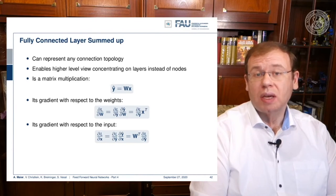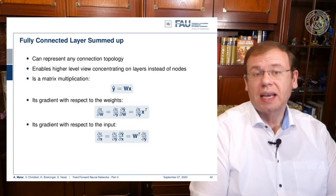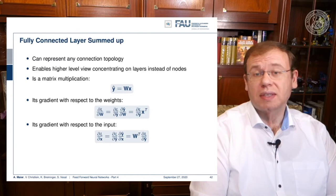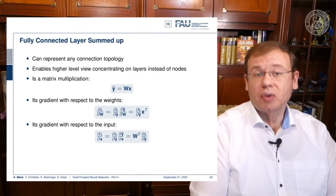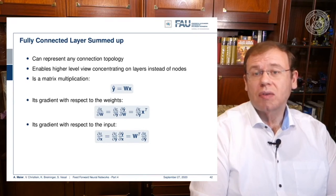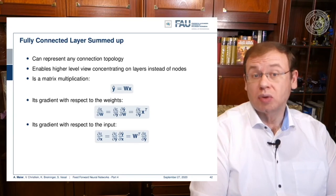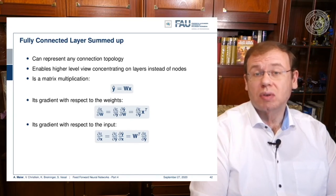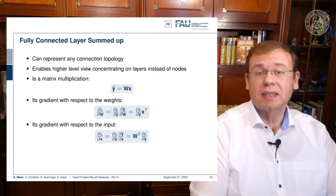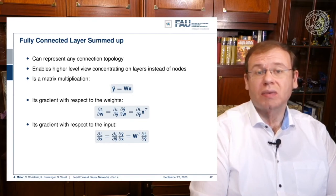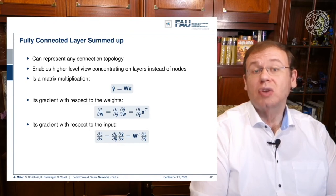For the partial derivative of y-hat with respect to x — also something you can find in the Matrix Cookbook, a very useful reference I'll provide in the description — we get W-transpose. So W-transpose multiplied with the loss vector gives a vector again. This is the vector you will need to pass on in the backpropagation process towards the next higher layer.